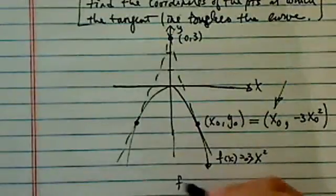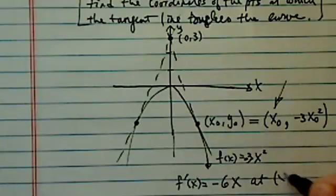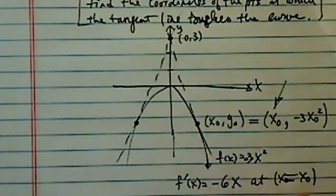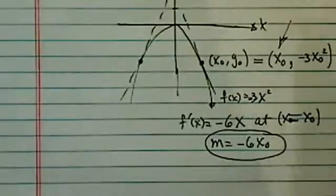Let's find the f prime of x. That's a pretty easy one to find, it's minus 6x. So, at x0, at x equal to x0, we have a slope of minus 6x0. We're going to keep this one on one side equation.